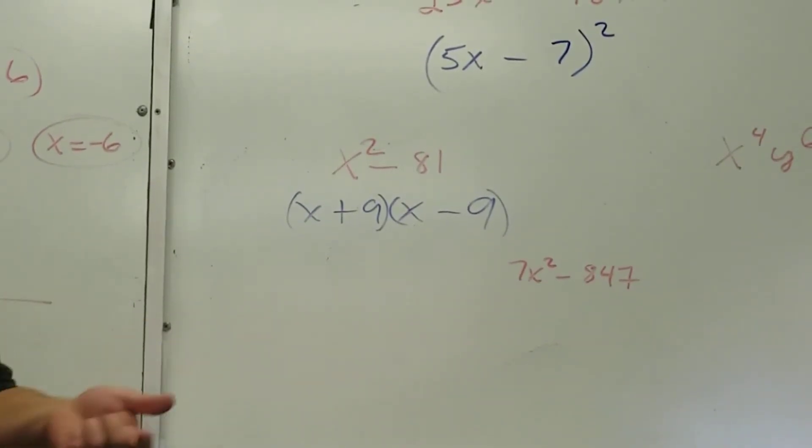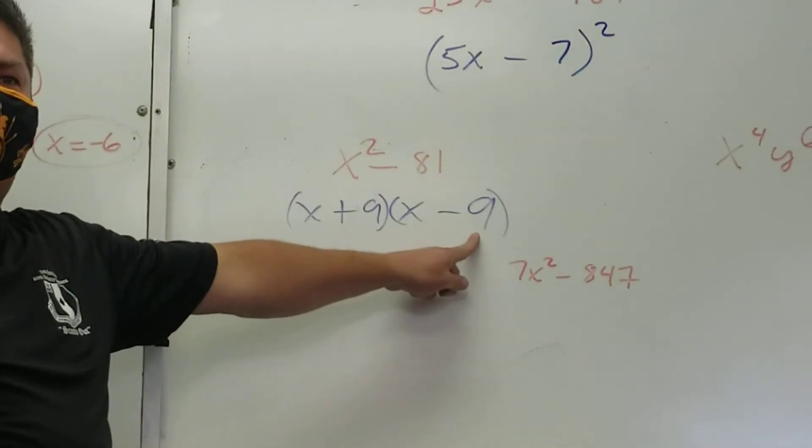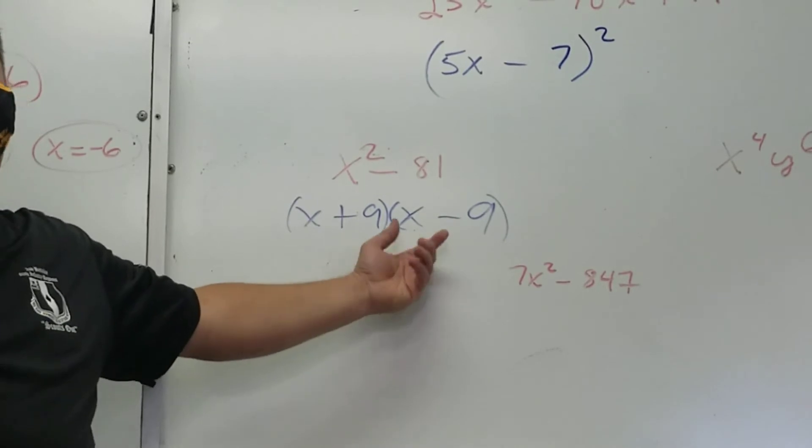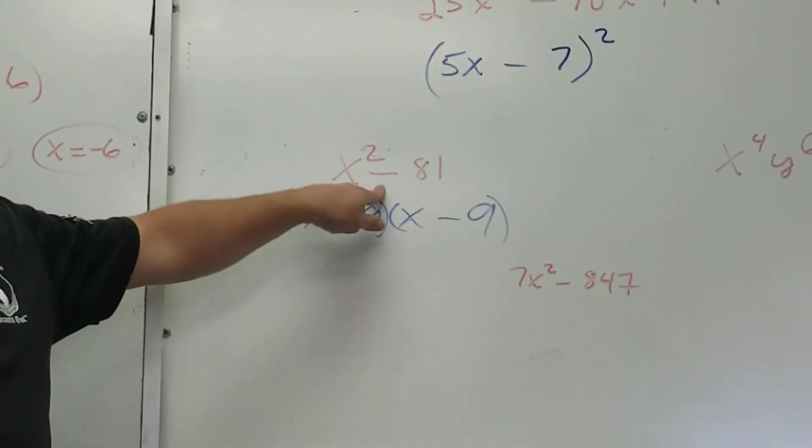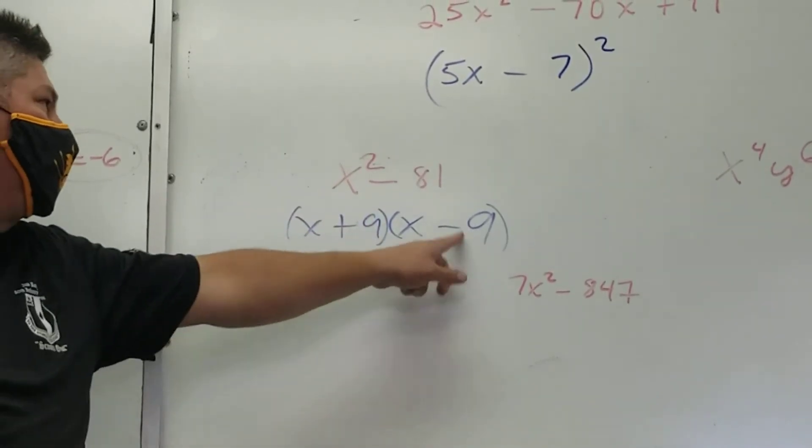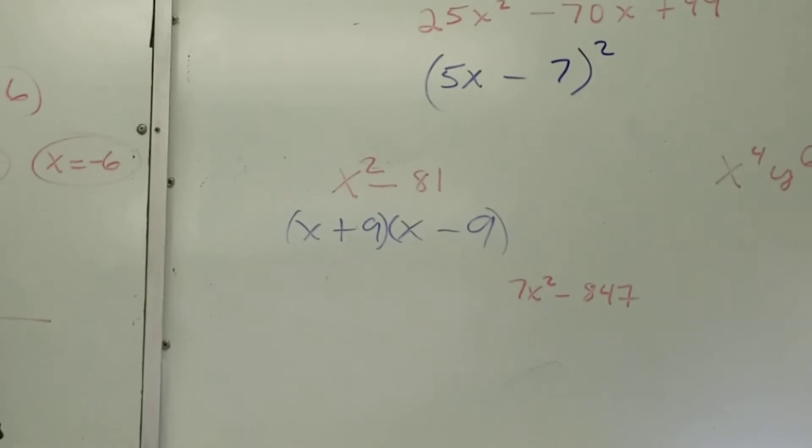It will factor into those conjugates we were multiplying before. Because what's going to happen with the inside and outside terms when you multiply that? What happens with the outside term? Negative 9x. What happens with the inside term? Positive 9x. What's going to happen? No x's. Is there any x's in that? No. So we're good. x squared minus 81. That's the factorization.